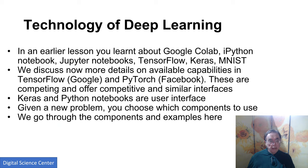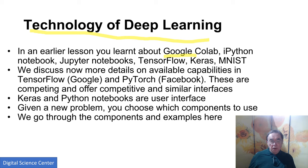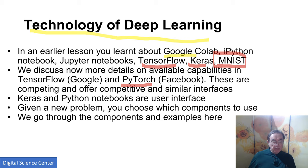This is Jeffrey Fox. We have the first real slide of this section, Technology of Deep Learning, which tries to put things in context. In a previous lesson, we looked at Google Colab, IPython Notebooks, and Jupyter Notebooks as the user interface. We used TensorFlow, Keras, and the MNIST dataset. TensorFlow and PyTorch are the two currently most important deep learning systems. Keras is a user interface that now just covers TensorFlow. MNIST is the NIST handwriting dataset. Keras, TensorFlow, and PyTorch are all effectively Python interfaces with lots of flexibility.